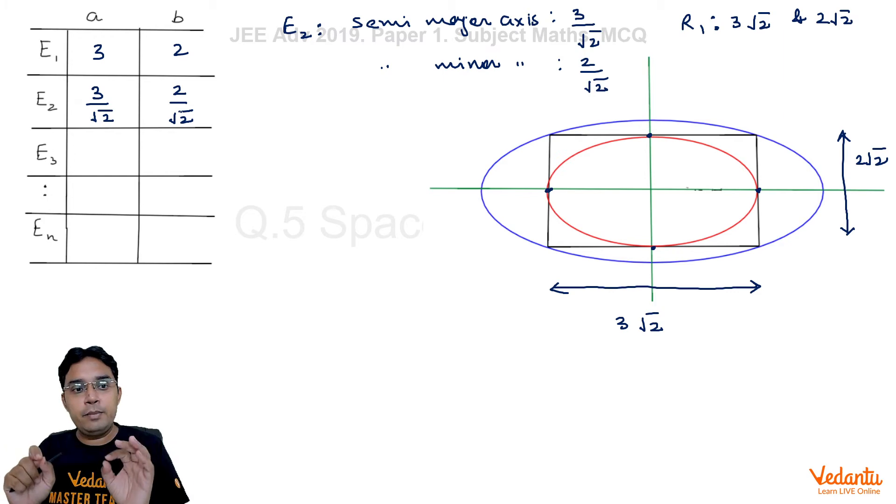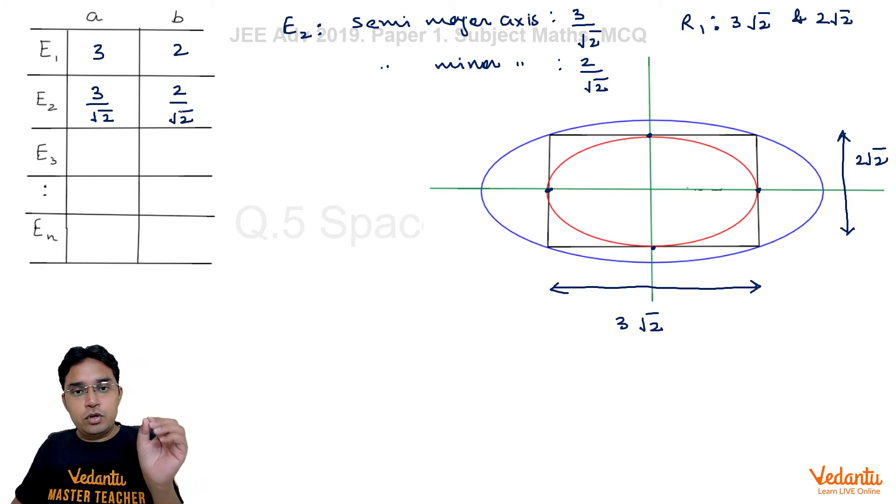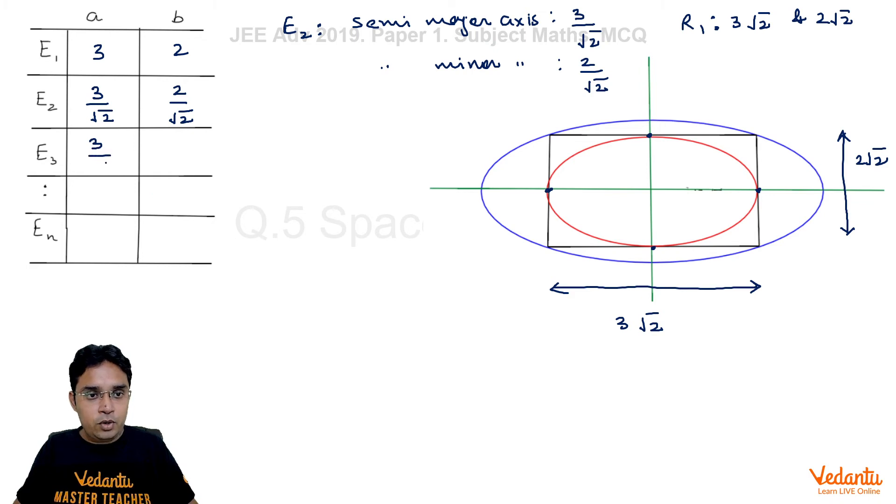Now once again we will be inscribing R2 inside this ellipse E2 and then we will be inscribing E3 inside that rectangle R2 and so on. But every time we can check the values of semi-major axis and semi-minor axis, they will become 1/√2 times of the previous value. So this E3 will become 3/2 and 2/2 and so on and so on.